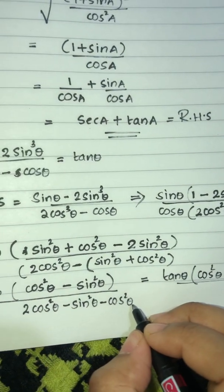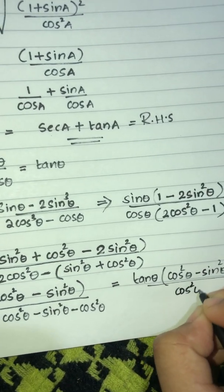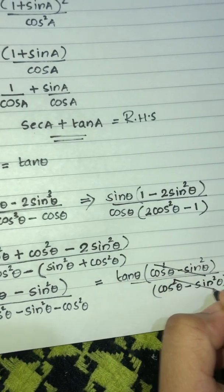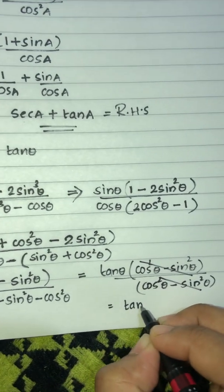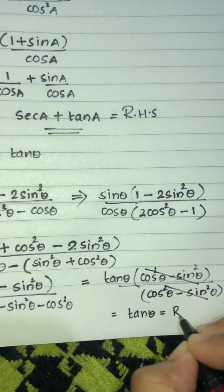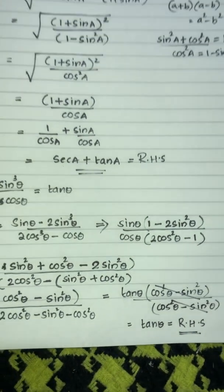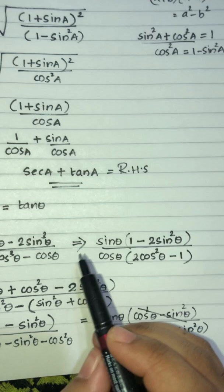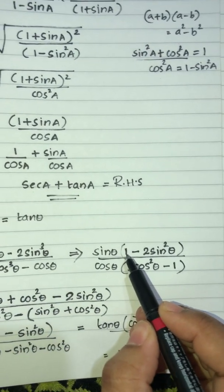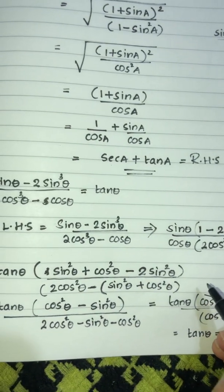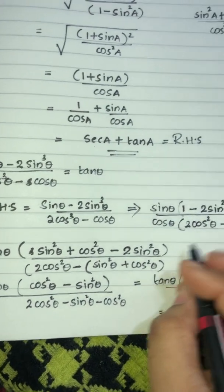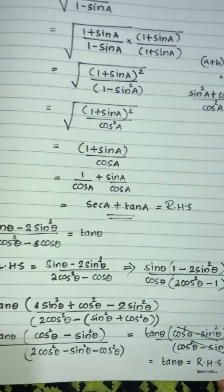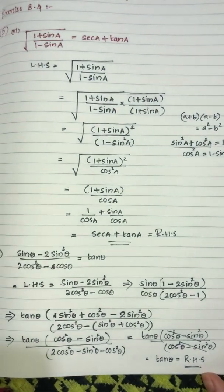We cancel the common factor of (cos squared theta minus sin squared theta) from numerator and denominator. This leaves sin theta over cos theta, which equals tan theta. Thank you.